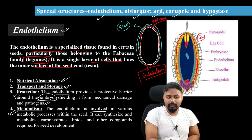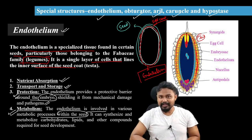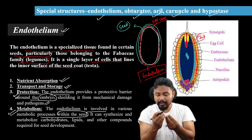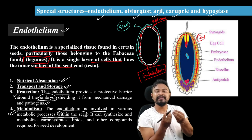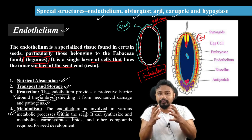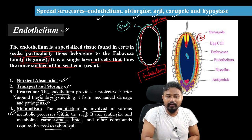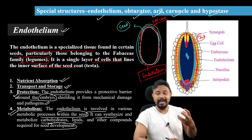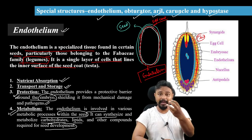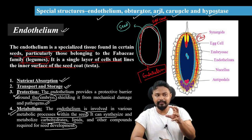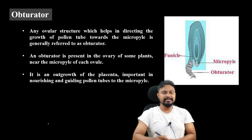The endothelium is involved in various metabolic processes within the seed. Chemical reactions are available because the embryo needs to develop. It can synthesize and metabolize carbohydrates, lipids, and other compounds required for seed development. The endothelium layer is a very important layer, considered a special structure inside the ovule around the seed.